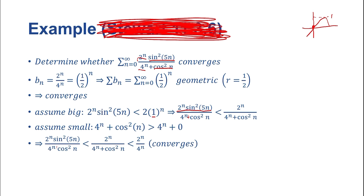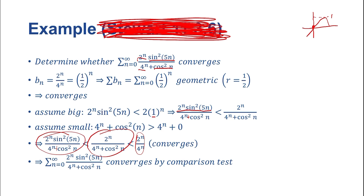So from this we can construct our chain of inequalities: 2 to the n times sine squared of 5n over 4 to the n plus cosine squared of n is less than 2 to the n over 4 to the n plus cosine squared of n, which is less than 2 to the n over 4 to the n. That's the largest case. With that proven, we can take the series of 2 to the n over 4 to the n, which we know converges, and we know now that it's larger than our original series.